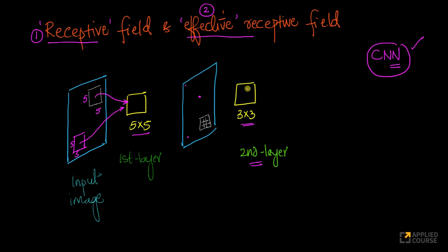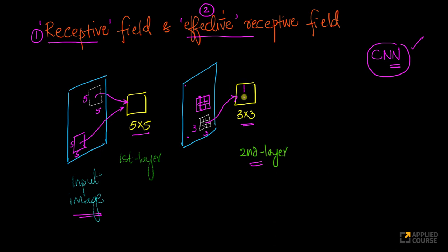Because the second layer kernel is 3x3, a 3x3 region of this output image — which is the output of the first layer, not the original image — will be convoluted with this kernel and an output will be generated. At a different time, another 3x3 will be convoluted, and so on. The receptive field in this output image for this kernel at a given time t is just these 3x3 pixels. But the effective receptive field is that part of the original image whose pixels are being indirectly convoluted with this.